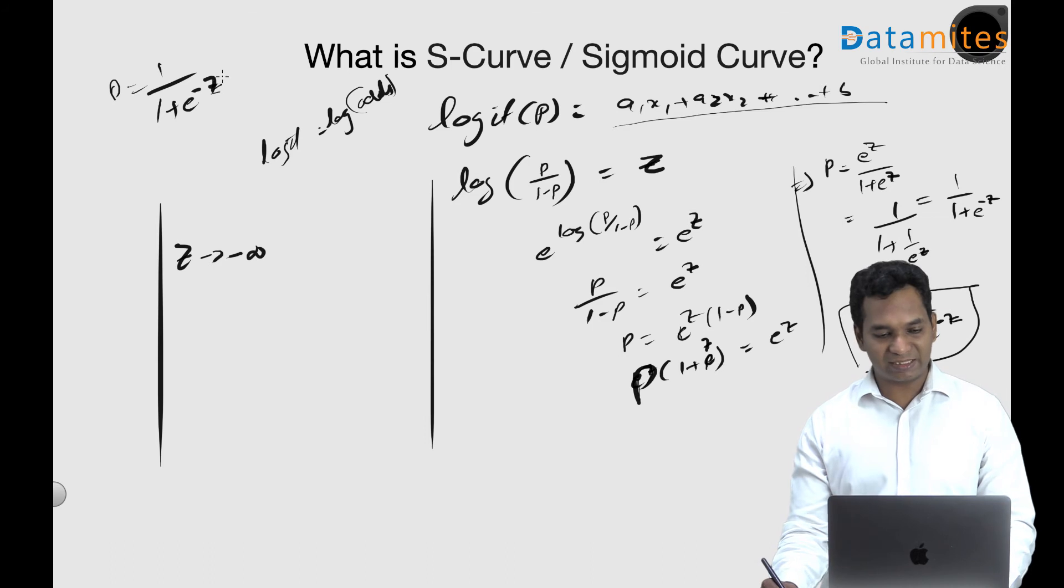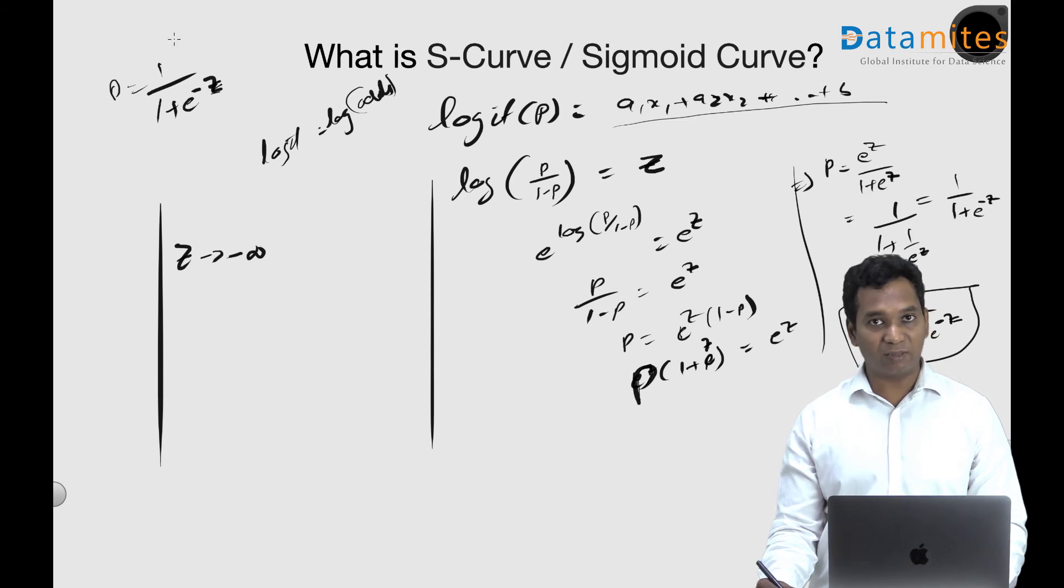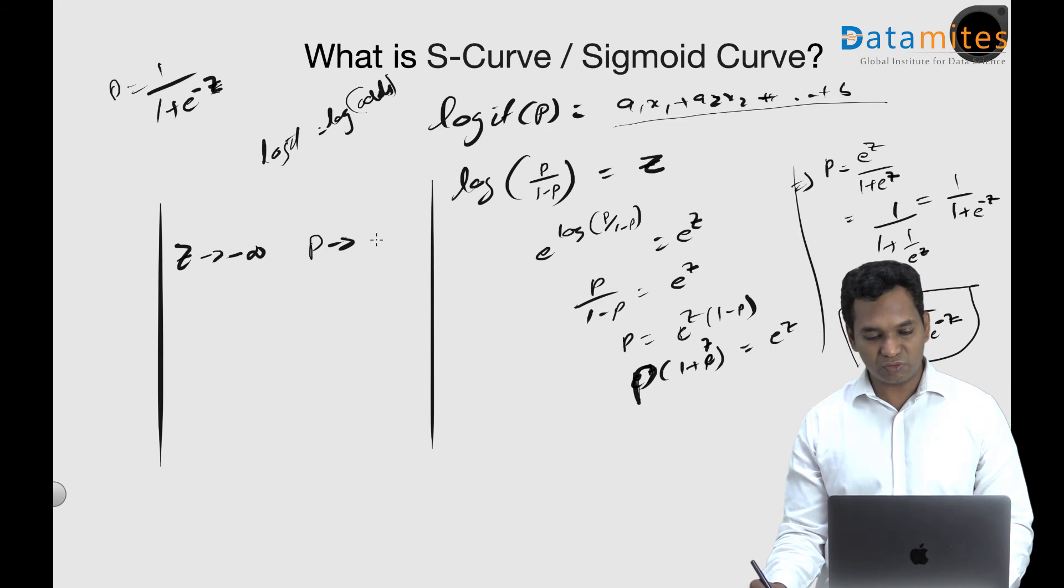If your z is tending towards minus infinity, your sigmoid function here, if z tends to minus infinity, this minus of minus becomes plus, e to the power of infinity is infinity, 1 by infinity is actually 0, then the sigmoid function probability tends to 0.